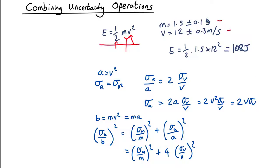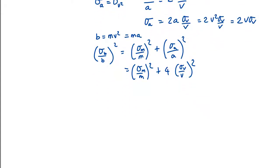So taking the square root we get that sigma b equals b root sigma m over m squared plus four sigma v over v squared.